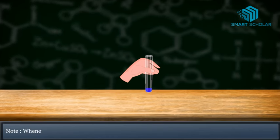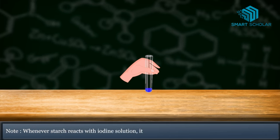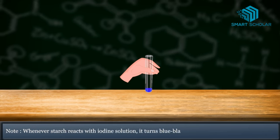Whenever starch reacts with iodine solution, it turns blue-black.